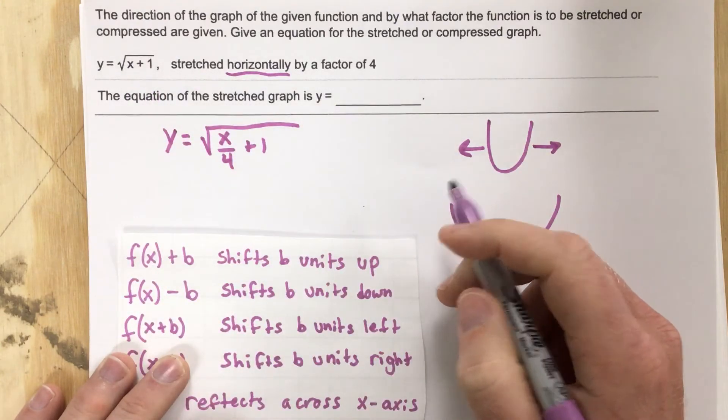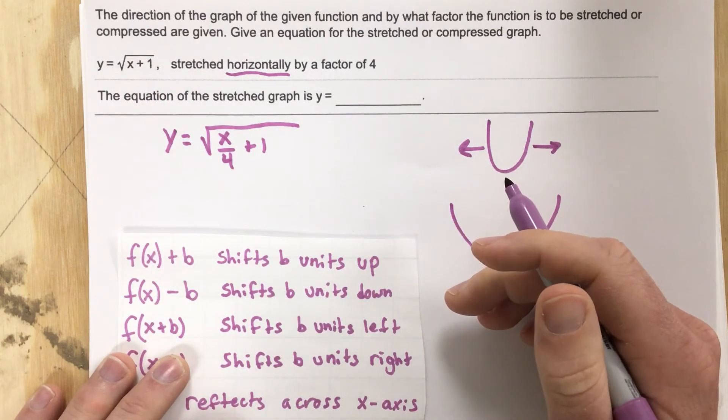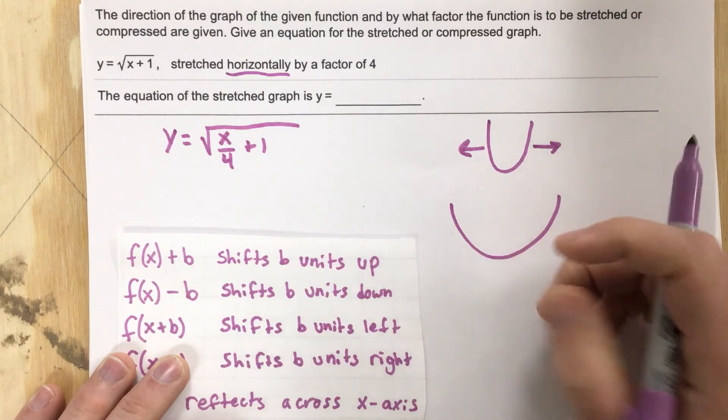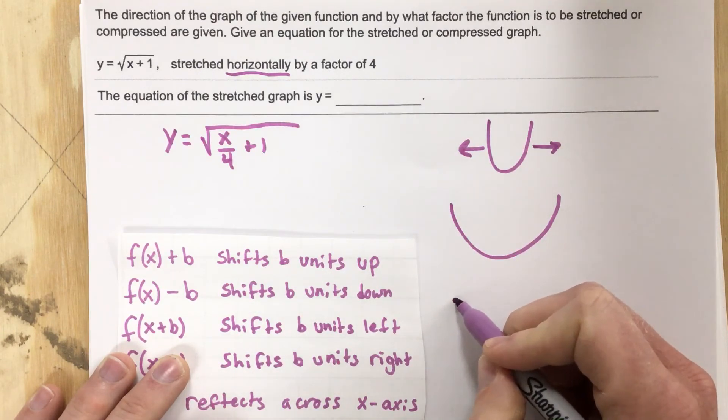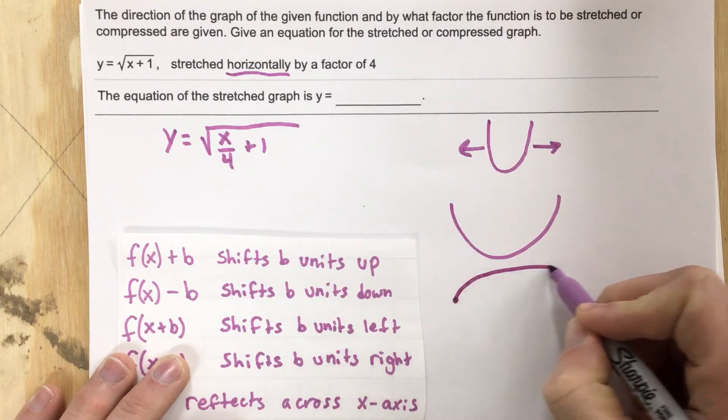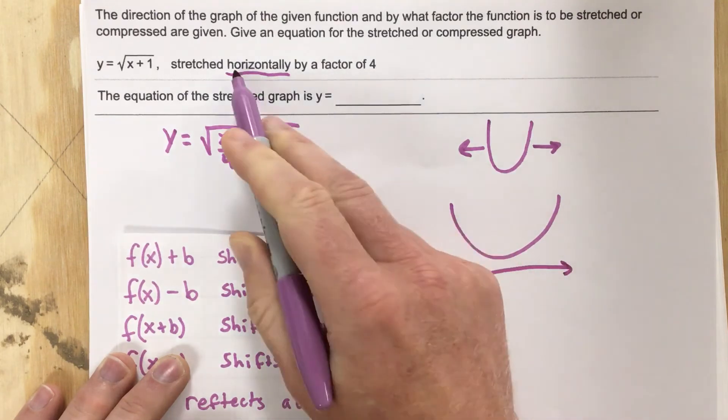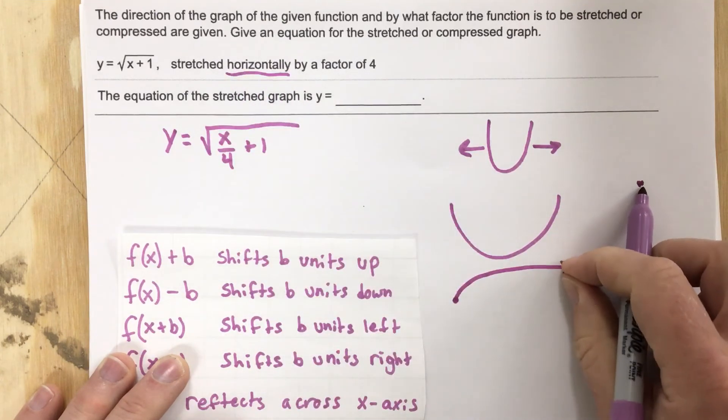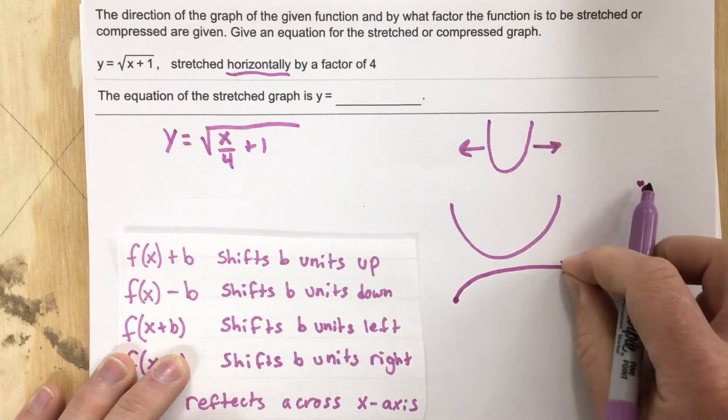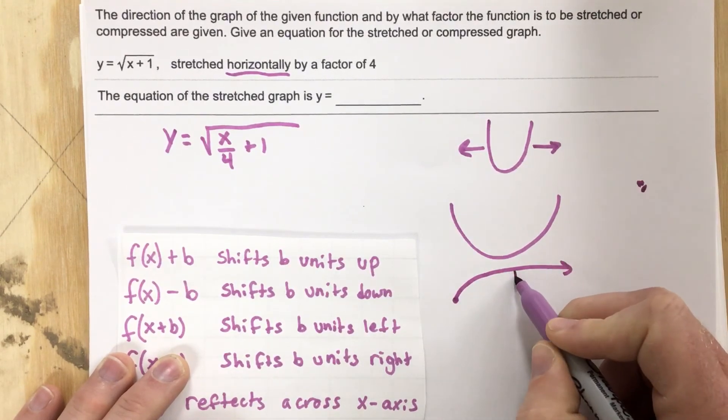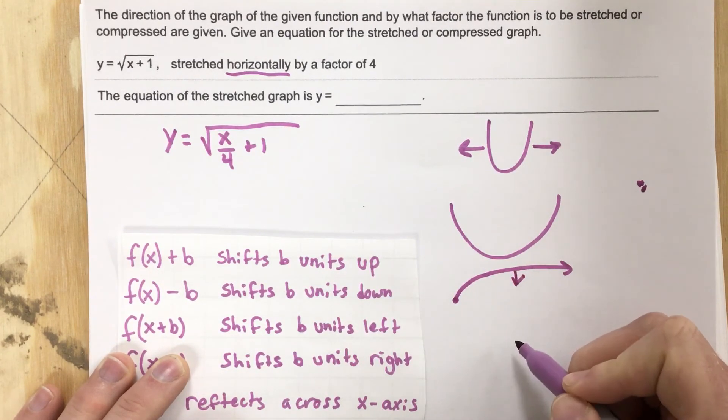It's going to make the radical flatten. So if we think about the radical equation, the radical equation looks like this. So if we want to stretch it horizontally, that means we're grabbing this end, and we're pulling it this direction. And when we pull it this direction, this wants to go downwards.